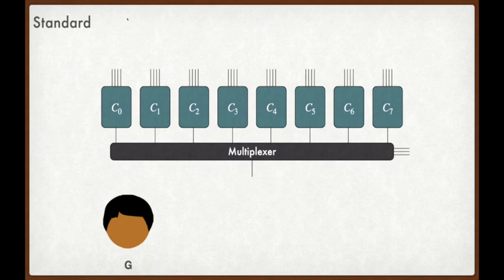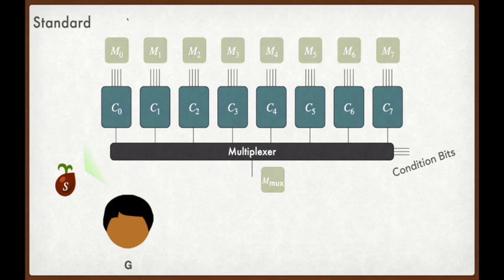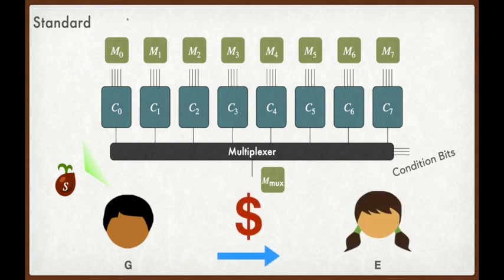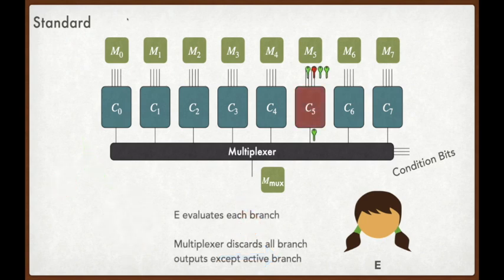The multiplexer will take in condition bits, which indicate which of the eight branches are supposed to be evaluated. Just like before, the generator G will start from a pseudorandom seed, then expand the seed into material. We'll denote the material corresponding to each of the sub-circuits separately, though in standard garbled circuits, the generator G simply takes all this material, concatenates it together, and sends it across the wire to E. Of course, this is very expensive. Upon receiving this material, the evaluator E will evaluate like normal. On the active branch, this will generate some values which will be propagated by the multiplexer. The evaluator also evaluates each of the inactive branches, since she doesn't know which branch is active.